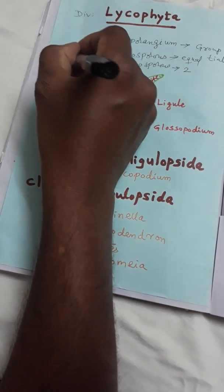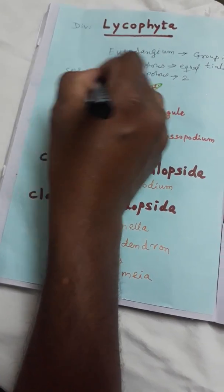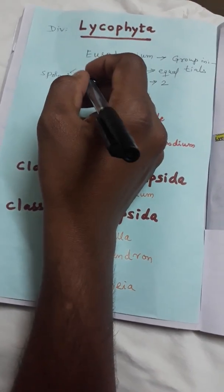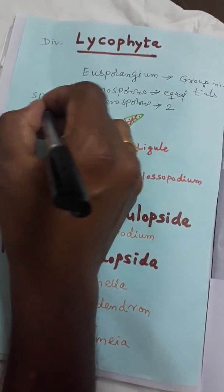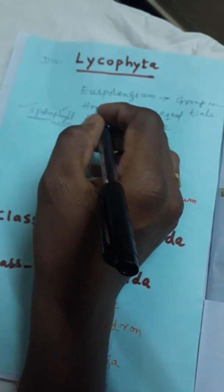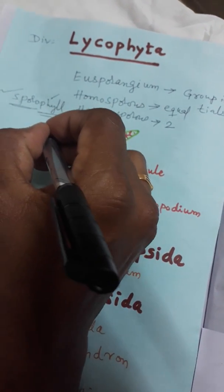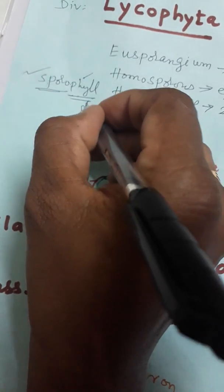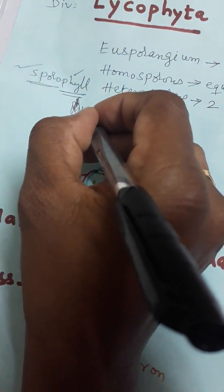Another character is sporophyll. 'Phyll' means leaf, and 'sporo' means spore-containing leaf — it is called sporophyll. These sporophylls are aggregated and formed like a cone. These cones are called strobilus.